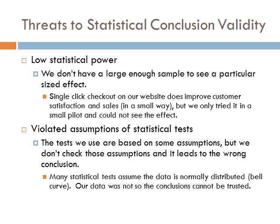When we violate an assumption, we don't necessarily know how much we've damaged the conclusion. The good news is there are corrections for this. With t-tests, for example, there's a test for homogeneity of variance — essentially checking that the two bell curves look about the same shape — and there's a correction if they don't. So we need to know enough about our statistics to check whether those assumptions are true, and then to correct the analysis if we do have a problem.